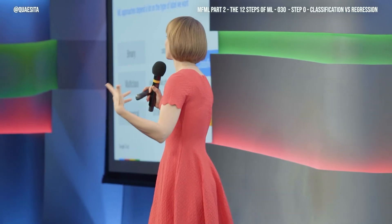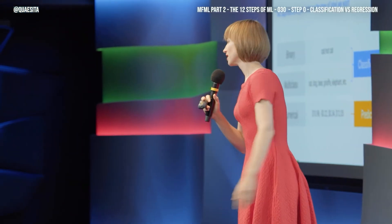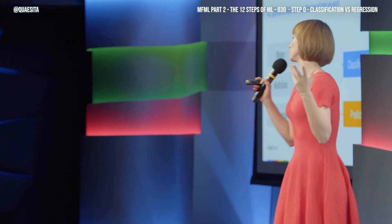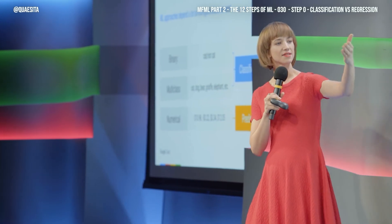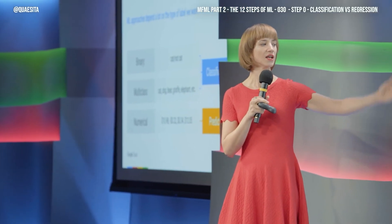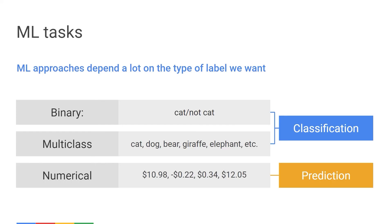But just to introduce you to standard jargon so you don't get confused — this tends to be the first few minutes of every machine learning course — let's orient ourselves: classification if there are categories coming out, and prediction or regression if the label is a number.